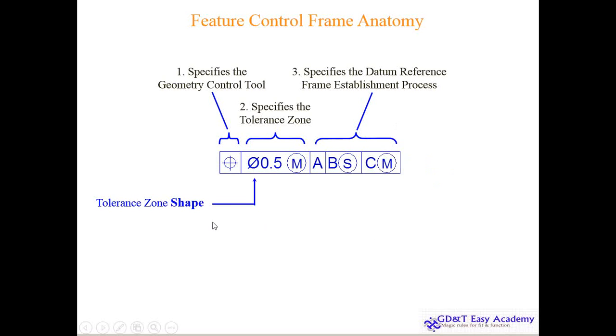So this is the tolerance zone shape. It will derive here that I have a cylindrical tolerance zone. If you have a square here, you can have a square tolerance zone. Tolerance zone size, this is the 0.5 here, and this is the tolerance size modifier, that is MMC.